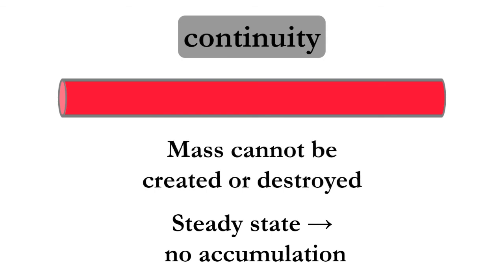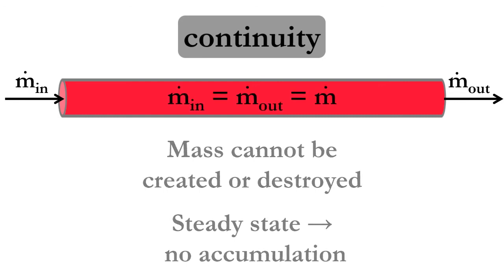Applying these principles to water flowing in a straight pipe, we can say that the mass of water entering the pipe has to be equal to the mass of water leaving the pipe, or in other words, the mass flow rate must be constant.